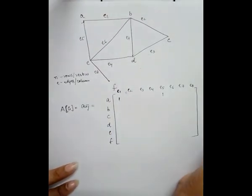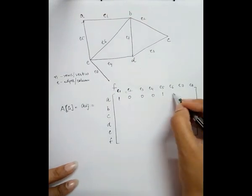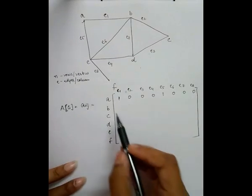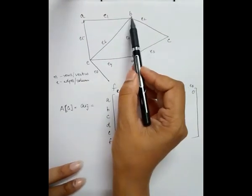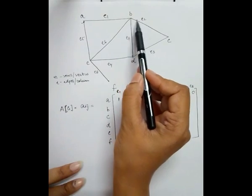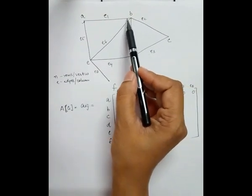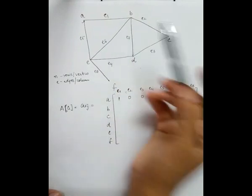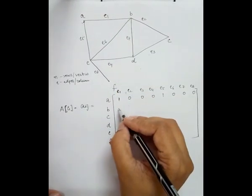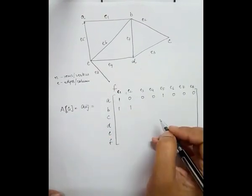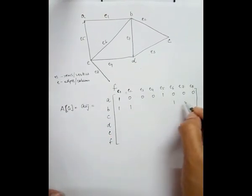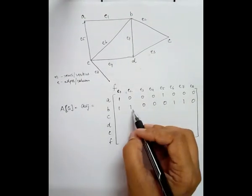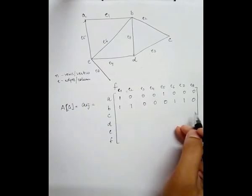On vertex a, the edges e1 and e5 are incident, having value one, and the remaining edge values are zero. Now on vertex b, the degree of the vertex is four, so four edges are incident: e1, e2, e6, and e7. Therefore the values of e1, e2, e6, and e7 are one and the remaining values are zero.